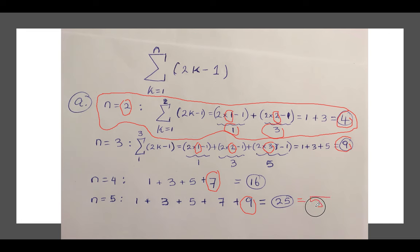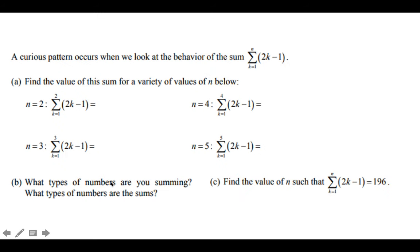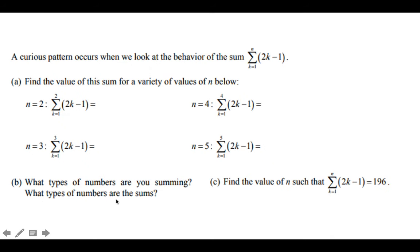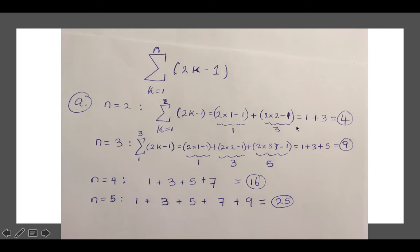Let's go to question B. B says what types of numbers are you summing, what types of numbers are the sums? The types of numbers that we are summing, 1, 3, 5, 7, are positive odd numbers. And the sums, as the question says, what types of numbers are the sums? The sums are perfect squares: 4, 9, 16, 2 square, 3 square, 4 square, 5 square.